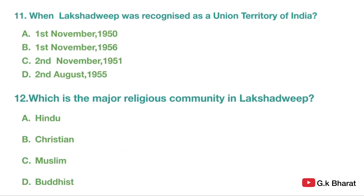Next. When was Lakshadweep recognized as the union territory of India? Option A: 1st November 1950. Option B: 1st November 1956. Option C: 2nd November 1951. Option D: 2nd August 1955. Your correct answer is option B — 1st November 1956.